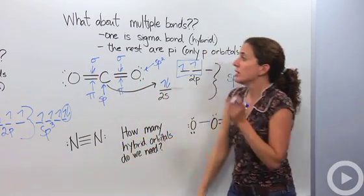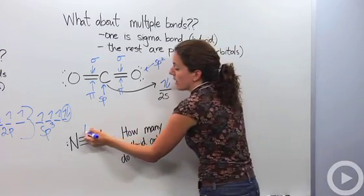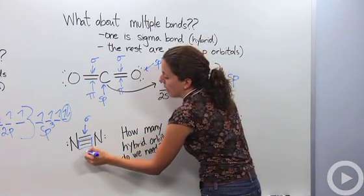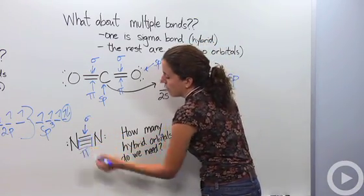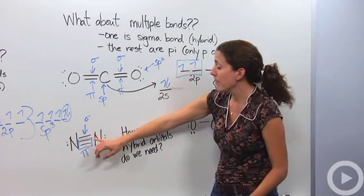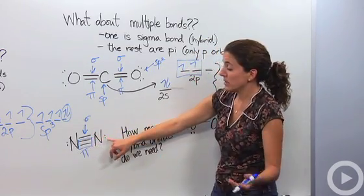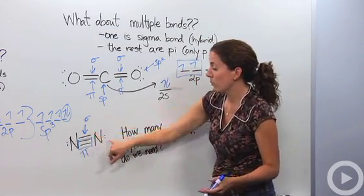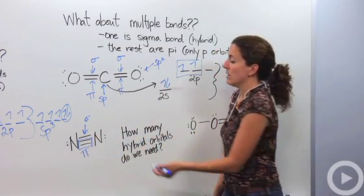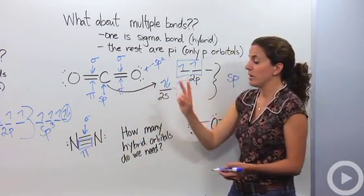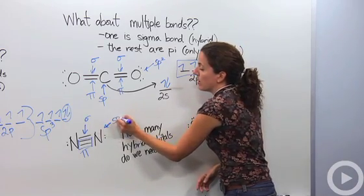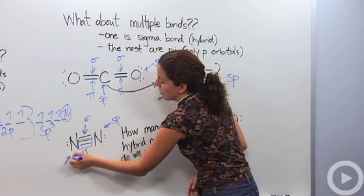Now let's look at a triple bond. One bond is sigma — hybridized — and the other two are pi bonds, which are just p orbitals, so we ignore them. For nitrogen in a triple bond, it needs two hybridized orbitals: one for the lone pair and one for the sigma bond. That's one from s and one from p, so we call this sp. Nitrogen here is also just sp.